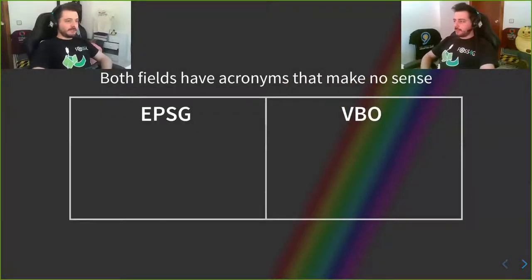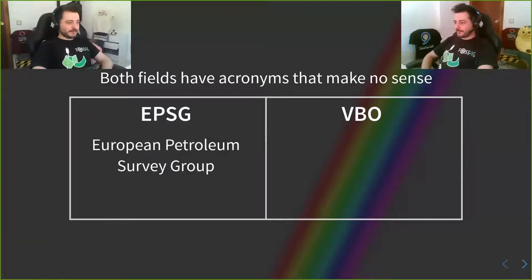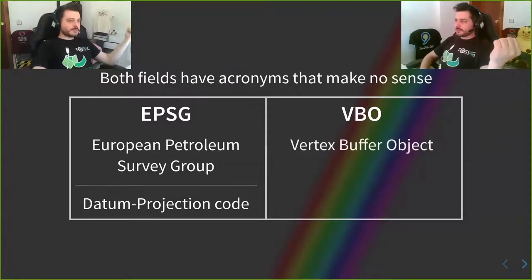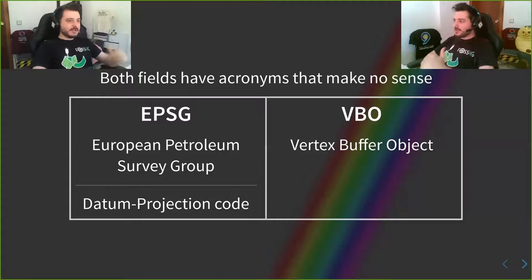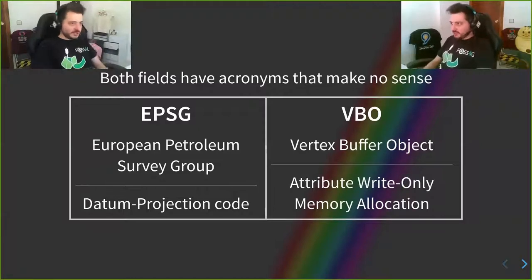Both fields have acronyms that don't make any sense whatsoever. A lot of people here will know what EPSG stands for, but if you're new to GIS, you might not be aware that EPSG stands for European Petroleum Survey Group — which makes no sense, because an EPSG code should really be called a datum projection code. On the other hand, we have VBO, which stands for Vertex Buffer Object — except it does not hold vertices, it holds attributes for vertices, it's not a temporary buffer, and it's not object-oriented. It really should be called something like 'attribute read-only memory allocation.'